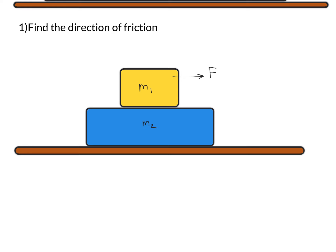To find the direction of friction, consider a point on block m1 and another point on m2. Assume there is no friction between these two surfaces. Due to the applied force F, block m1 will move towards the right — that point will move towards the right relative to a point on m2. If friction is present, it will oppose the relative motion, so m2 will exert a friction force F1 on m1 in the opposing direction.